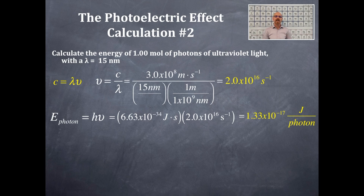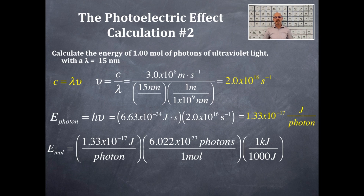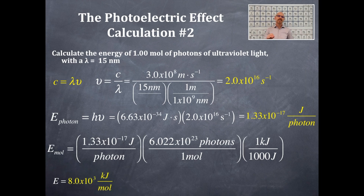We still need the energy per one mole of photons. We cancel out the photons using Avogadro's number — one mole equals Avogadro's number of photons — and convert joules to kilojoules so the numbers are in a familiar range. The photons cancel, kilojoules end up in the numerator, and we get 8.0×10³ kilojoules per mole.